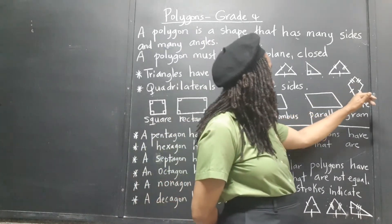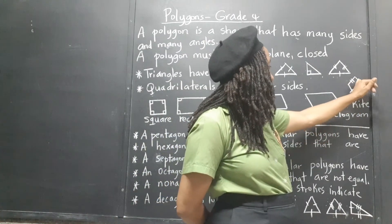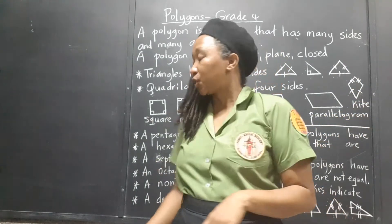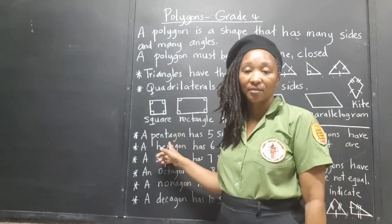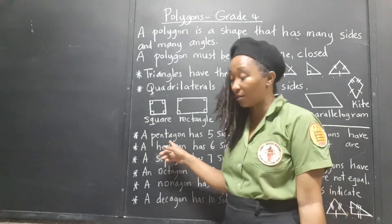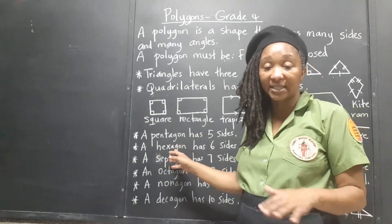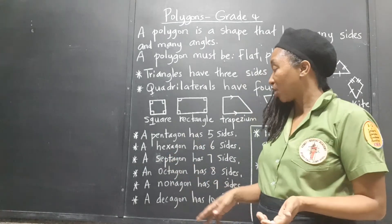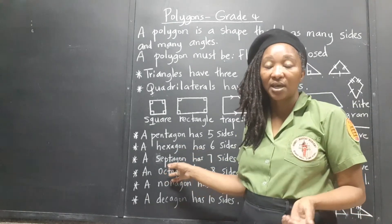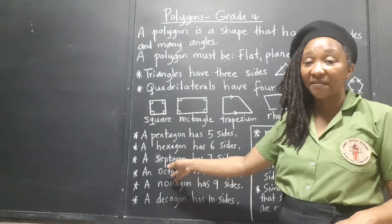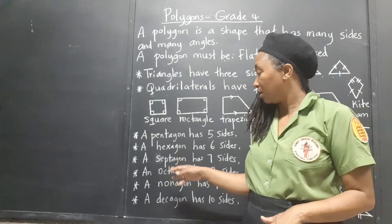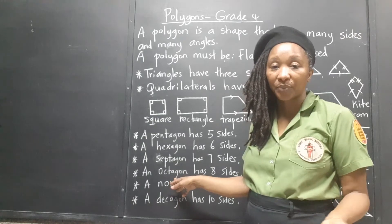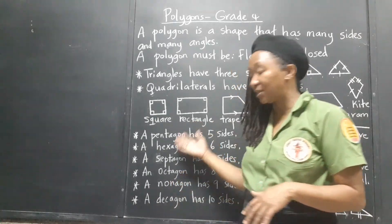In the kite, these two sides are equal and these two sides are equal to each other. We can have a regular pentagon — all sides equal — or an irregular pentagon. A regular hexagon has all six sides equal; an irregular one has six different sides. Regular septagon — all seven sides equal; irregular septagon — seven different lengths. Regular octagon — all eight sides equal; irregular — eight different lengths. And so on.